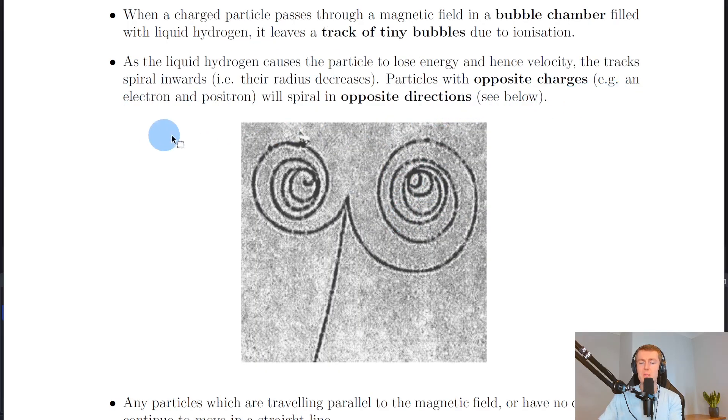Particles with opposite charges, for example an electron and positron, will spiral in opposite directions, as shown in the diagram here. On the left we have the path taken by the electron, and on the right we have the path taken by the positron. They both spiral inwards, so their radius decreases.